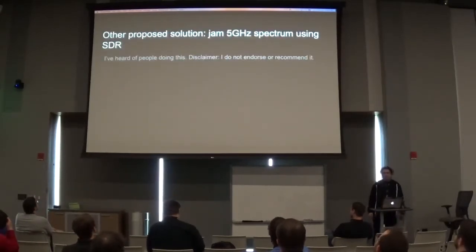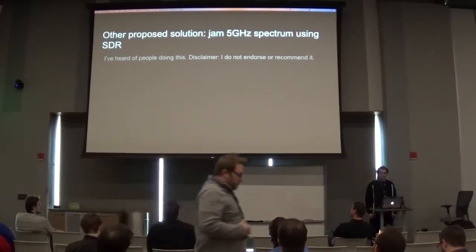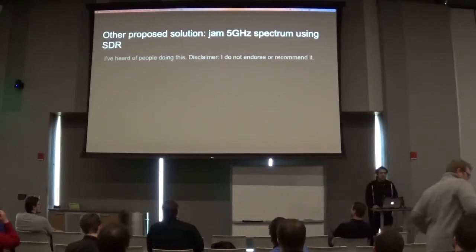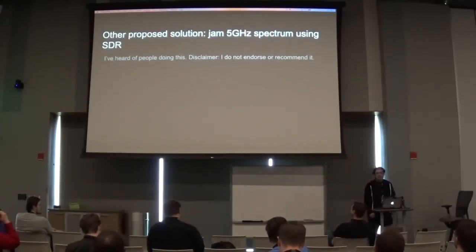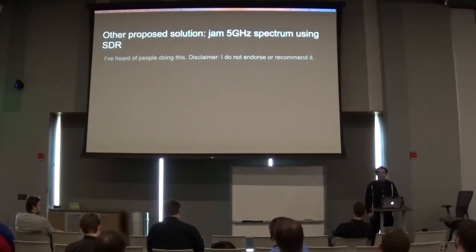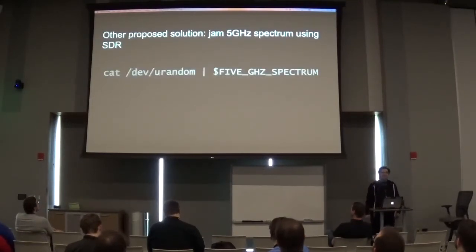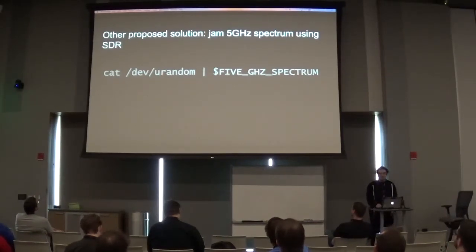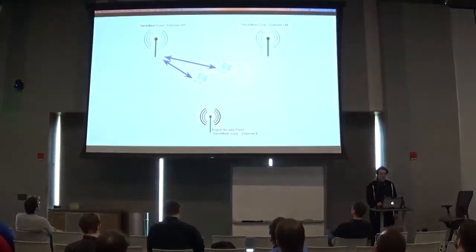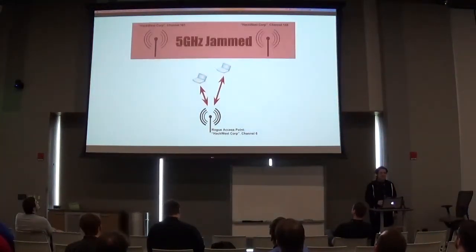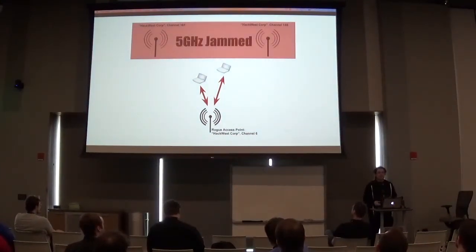Here's another solution I've seen — I do not endorse or recommend this, but I have heard of people doing it. A lot of 802.11n and AC access points stick exclusively to the 5 gigahertz spectrum. So you put up your own access point on 2.4 gigahertz and just jam the entire 5 gigahertz spectrum using SDR, piping random noise into it. This forces devices to come back down to your little 2.4 gigahertz access point to connect to you.